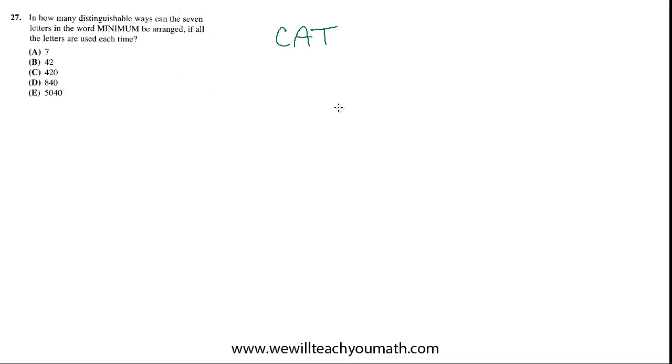Basically, if we want to know how many ways we could arrange this, we need to take into account the fact that there are repeat letters. Let's take an easier example first to review why this works. Suppose you had CAT and wanted to know how many ways you could arrange the three letters. That would be 3 factorial, which is a special case of a permutation where you take all of the objects in the set — also written as 3P3.